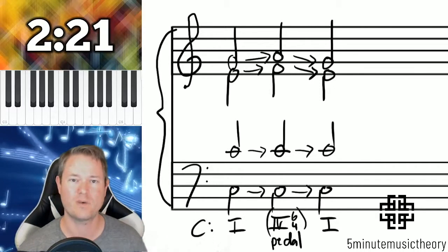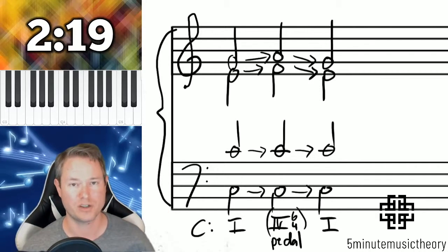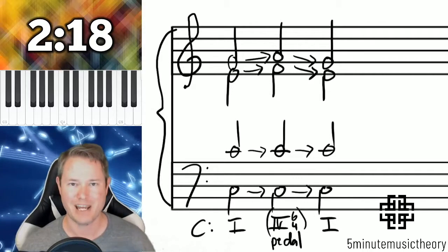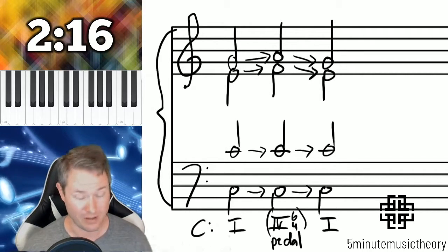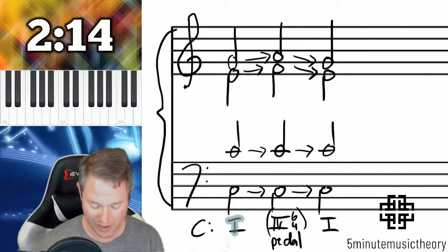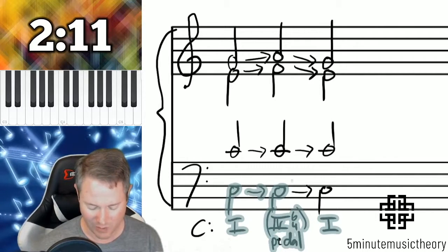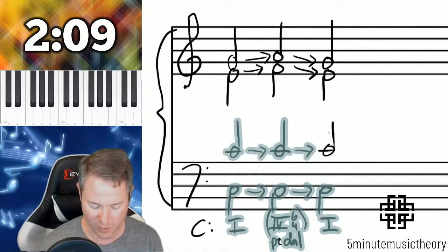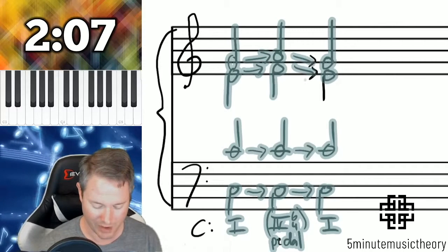The pedal 6-4 is a 6-4 in between two functional chords, which all have the same bass note. And this is by far the most common type. I'll show you the other type that's second most common. Then you probably won't really see any other pedal 6-4s other than the two that I'm going to show you here.